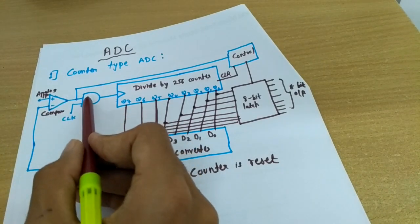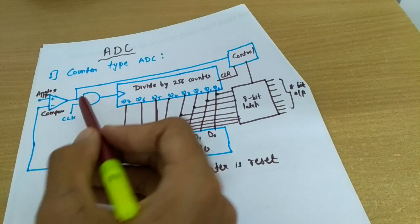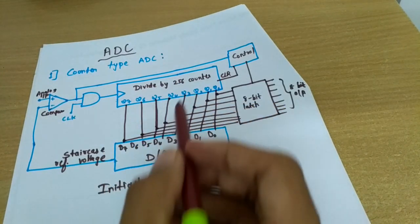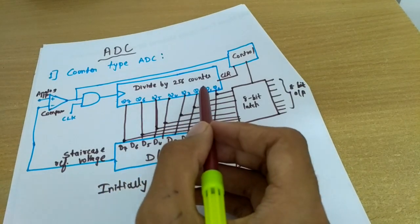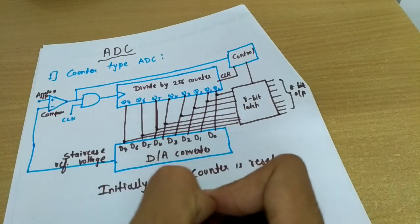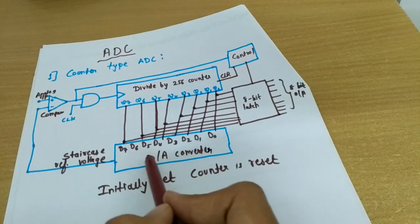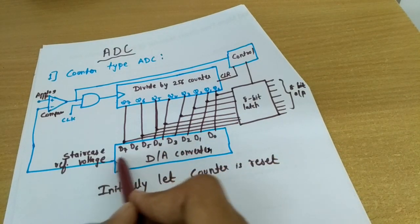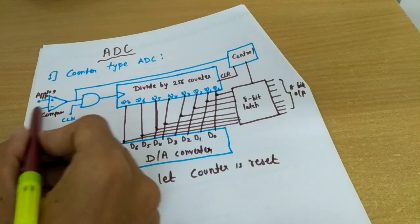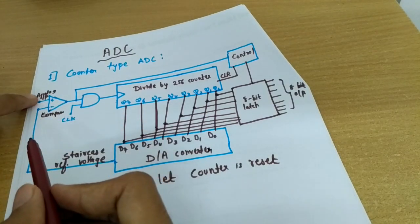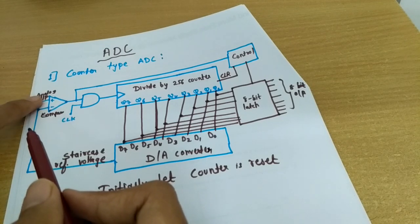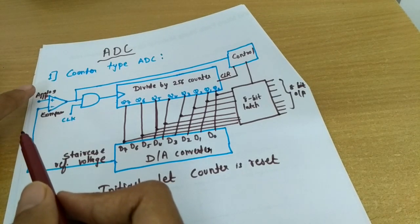Initially, the comparator output is high, so this AND gate is enabled because it is connected with the clock, and the counter will start counting from zero and continue to count. As it counts, all these inputs are simultaneously applied to the Digital-to-Analog converter. The analog output of the DAC is taken as the reference voltage back to the comparator, which is compared with the analog input, and accordingly we get a high or low output.